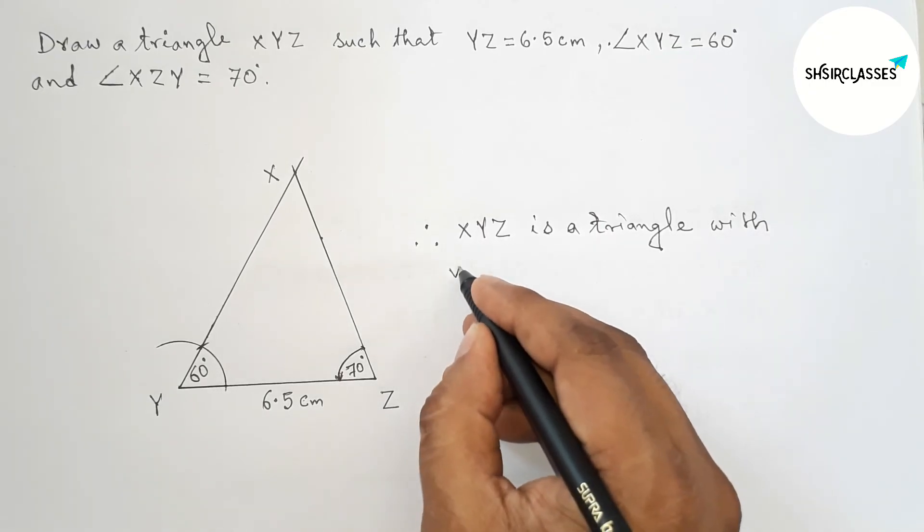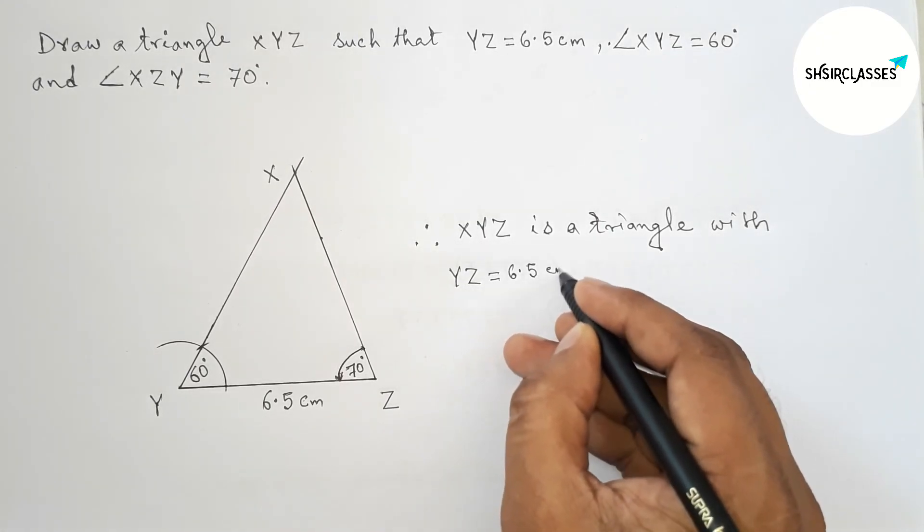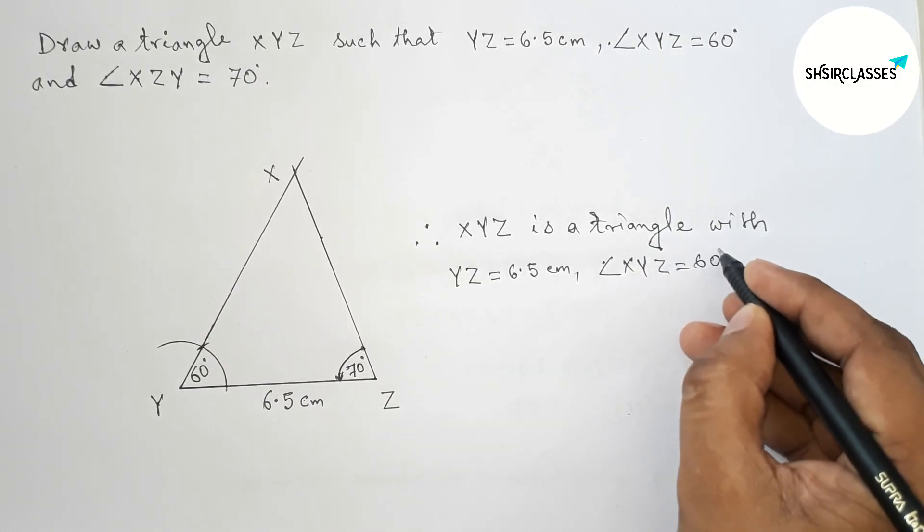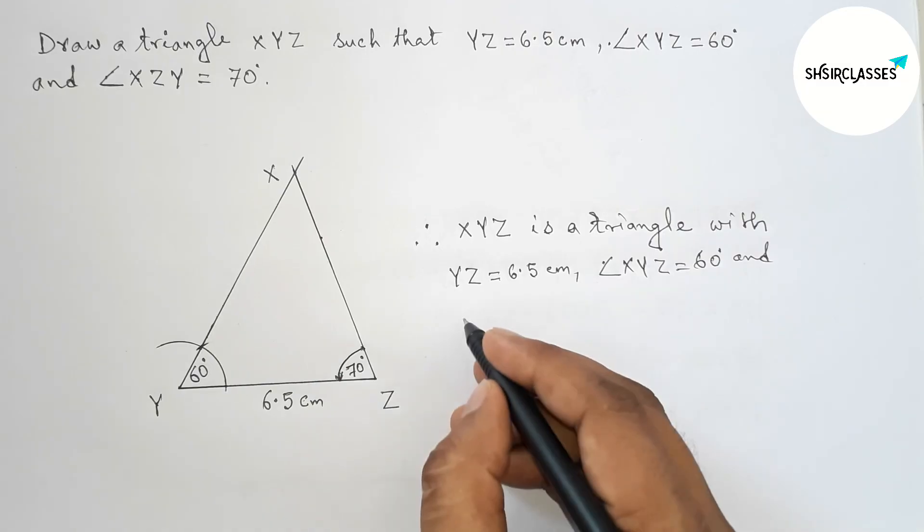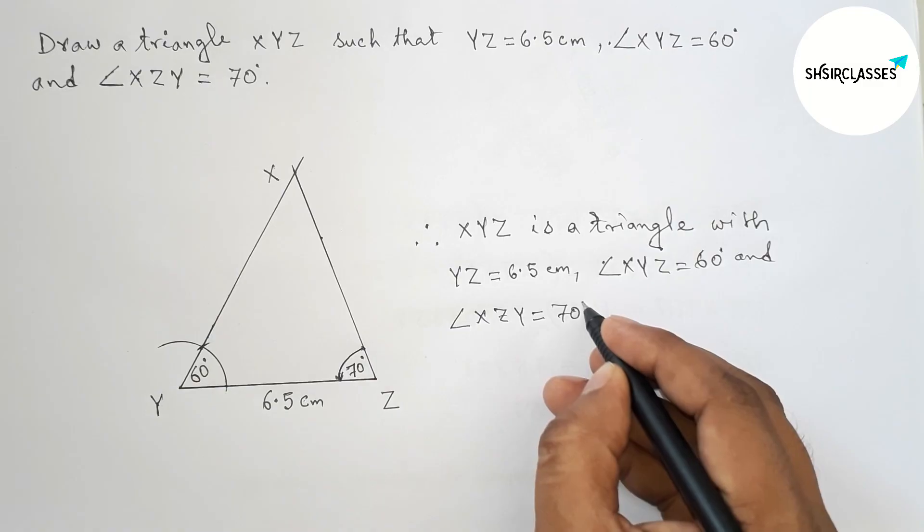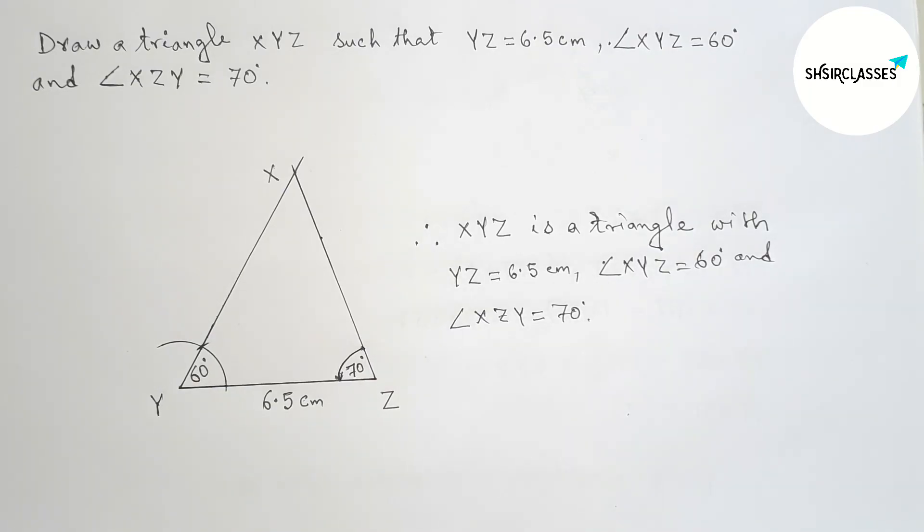Therefore, here XYZ is a triangle with given one side YZ equal 6.5 centimeter and given two angles: angle XYZ 60 degrees and angle XZY 70 degrees. That's all, thanks for watching. Please share it with your friends.